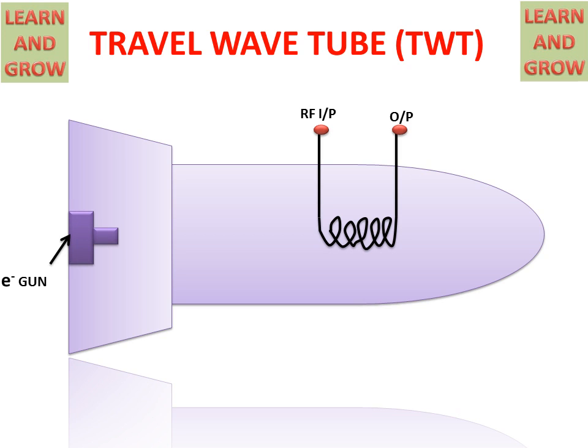It contains an electron gun that acts as a cathode, used to generate electrons which pass through the helix. These electrons pass along the axial helix.